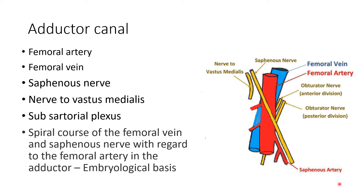Coming to the femoral vein, it lies posterior to the femoral artery in the upper part, and when it comes down, it is lateral to the femoral artery in the lower part. The other content is the saphenous nerve. The saphenous nerve crosses anterior to the femoral artery from the lateral to medial side.